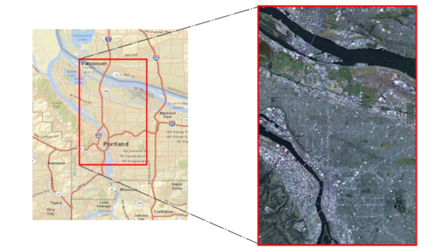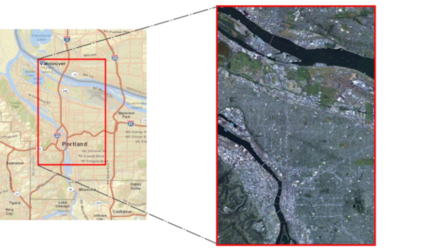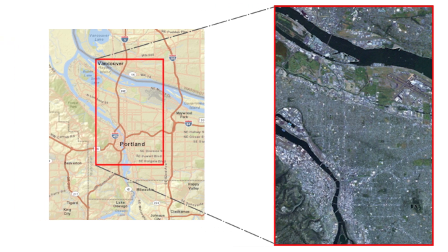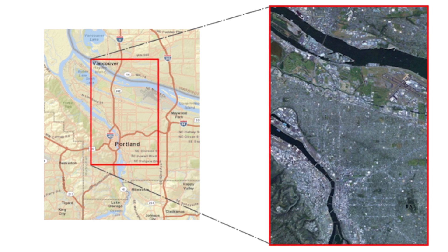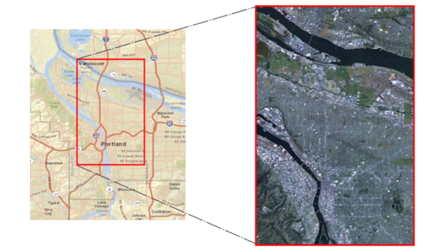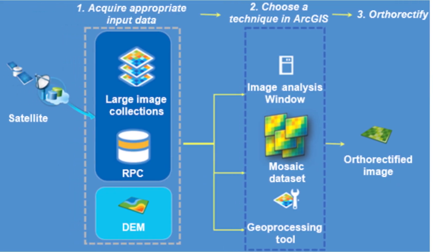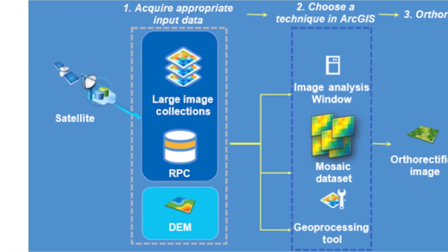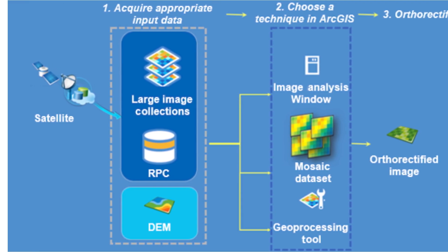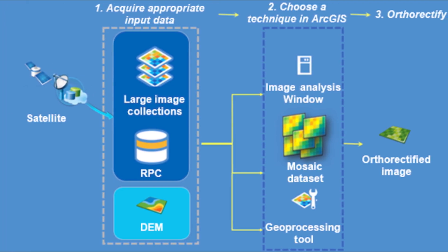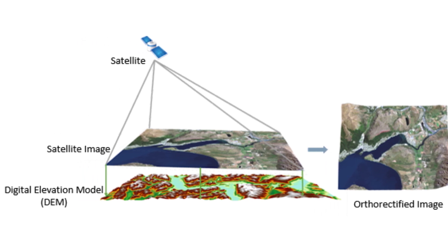Method two: using the mosaic dataset method applies the geometric function to the dataset. This method is used for orthorectifying several satellite scenes at the same time, storing the results permanently within the mosaic dataset — but requiring export if a new orthorectified raster file is required for non-ArcGIS applications — and creating output in a different coordinate system than the source raster data.